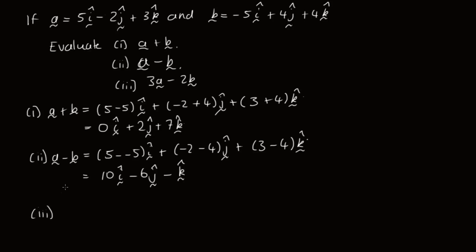And finally, we've got 3a minus 2b. So we've got 3 times 5, that's 15, minus 2 times minus 5, so that's plus 10i. Plus 3 times minus 2, so that's minus 6, minus 2 times 4, so that's minus 8j. And then we've got 3 times 3, so that's 9, and then minus 2 times 4, so that's minus 8k. So this is equal to 25i minus 14j plus k.